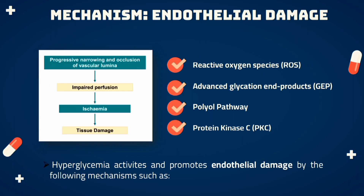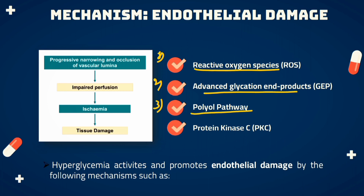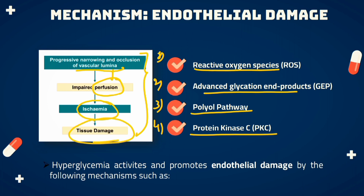This metabolic dysregulation produces reactive oxygen species and advanced glycation end products; the polyol pathway develops and there is release of protein kinase C. This ultimately leads to progressive narrowing and occlusion of the vascular lumen, compromising perfusion of the organ or tissue and producing ischemia and damage to such tissues.